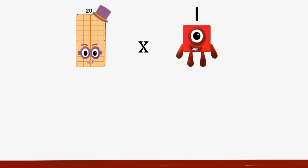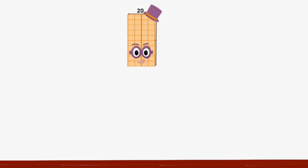Stage one. Twenty times one equals twenty.